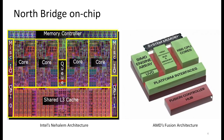Sometime around 2005, the north bridge was brought onto the chip. Intel's Nehalem architecture had four cores with a shared L3 cache, and at the periphery had lots of I/O and the memory controller almost in parallel. AMD's Fusion architecture was developed by AMD and it too has the memory controller and some I/O operations sitting on the processor core.